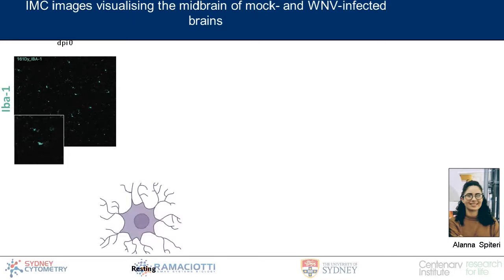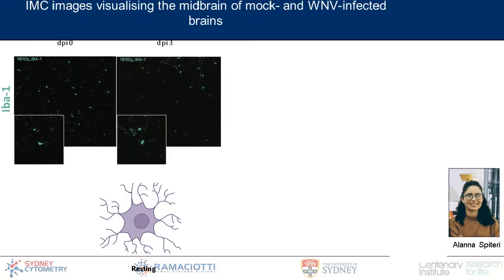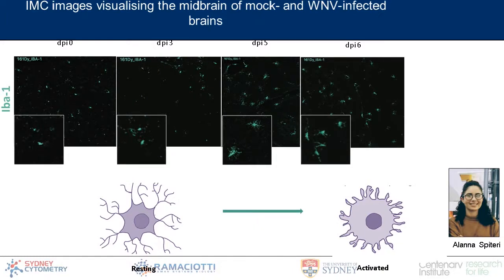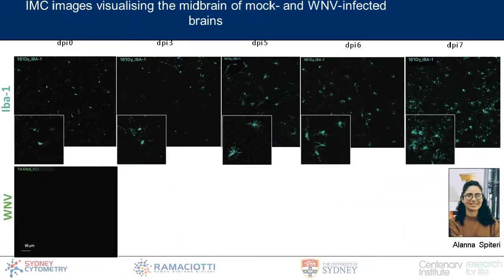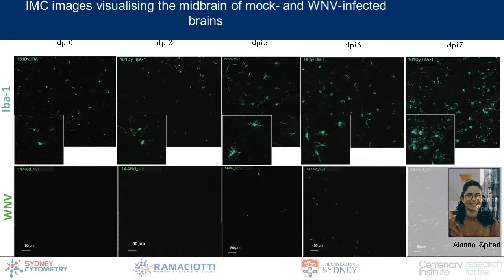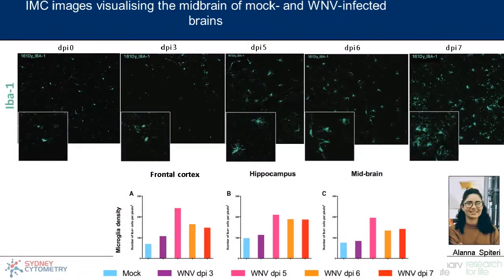When profiling how microglia change over time in the brain, we find that in the normal brain they have a classic spindly morphology. As infection progresses from day zero to day seven, these cells become activated and more responsive to the presence of virus. This happens in concert with the expansion of viral NS1 signal permeating through the neuronal systems, which becomes substantial over seven days. We can not only visually and phenotypically visualize these changes but quantify and track them using segmentation, merging suspension CyTOF approaches with IMC imaging.